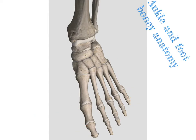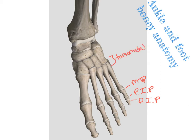Looking at the joints of the foot, starting down at the toes, in toes number 2 through 5 we have a distal interphalangeal joint, just like we saw with the finger, and a proximal interphalangeal joint. We have our metatarsal phalangeal joint, and then our tarsometatarsal joints. Moving up behind that, the articulation between the tibia and the talus is called our talocrural joint. The joint between our talus and our calcaneus is called our subtalar joint.